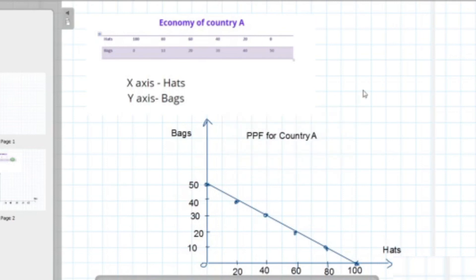So this is how an accurate, labeled PPF would look like. You have labeled your y-axis, x-axis, and you have done your coordinates correctly. You have done a straight line according to the coordinates you got, and you have given it a label.